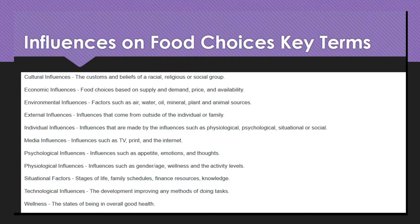Individual influences are influences such as physiological, psychological, situational, or social. Media influences are influences such as TV, print, and the internet. Psychological influences include appetite, emotions, and thoughts. Physiological influences include gender, age, wellness, and activity levels.